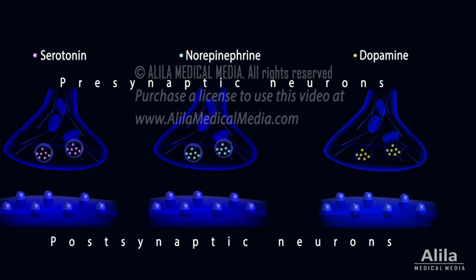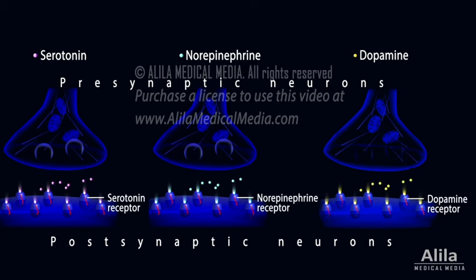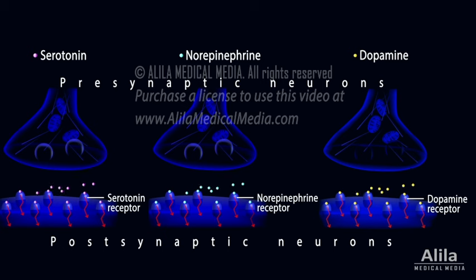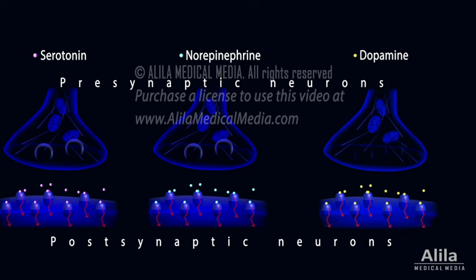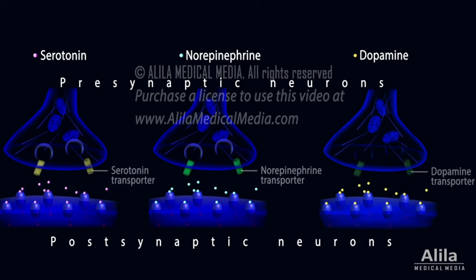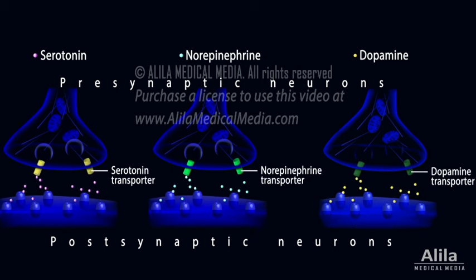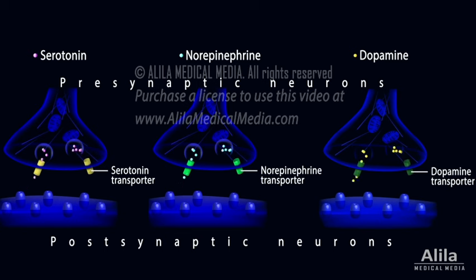They are produced in their respective presynaptic neurons and released to activate their respective receptors on postsynaptic neurons. Their action is then terminated via their removal from the synaptic space.